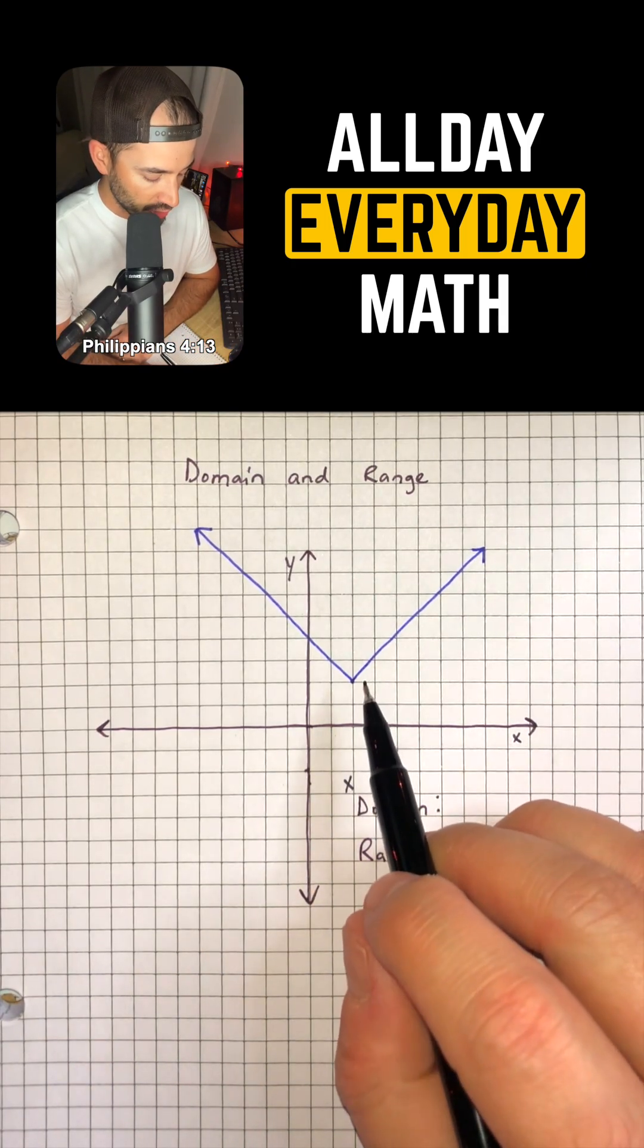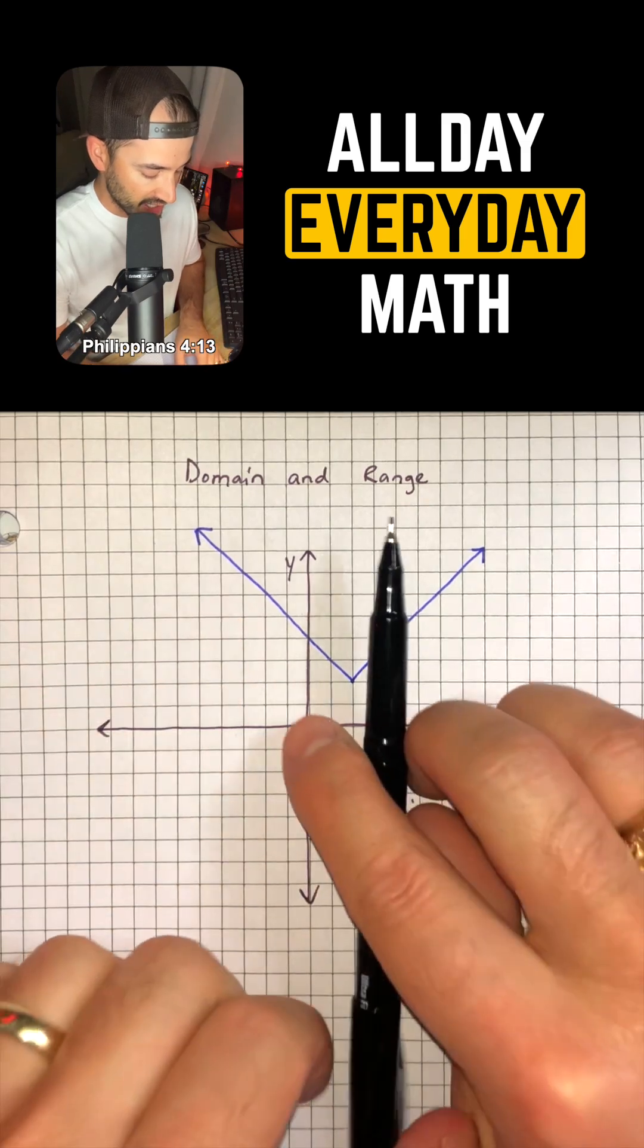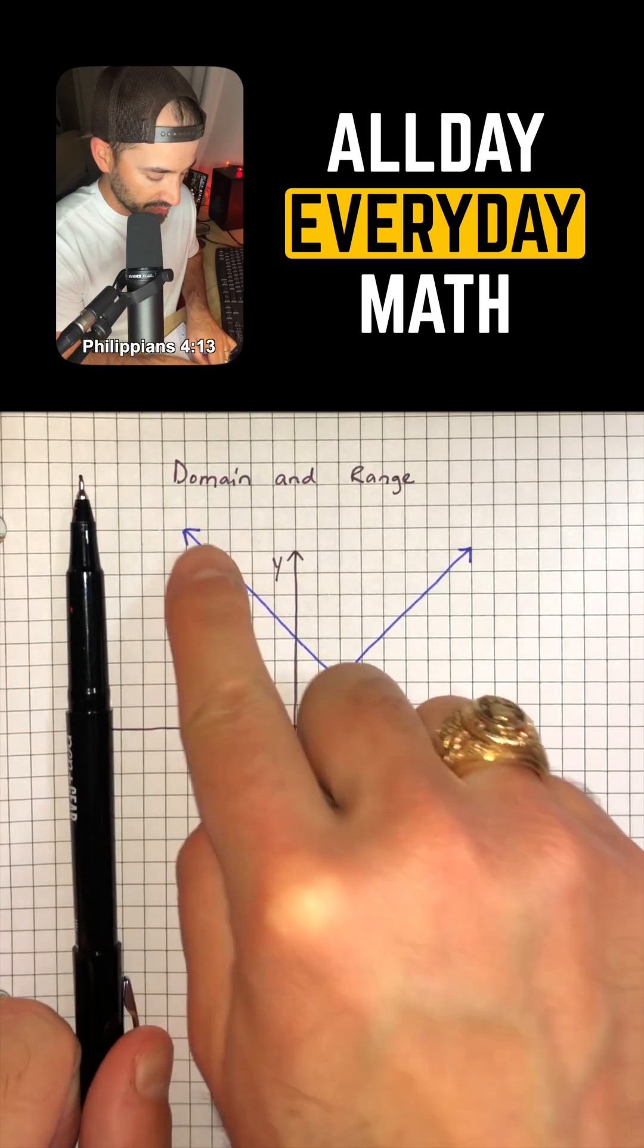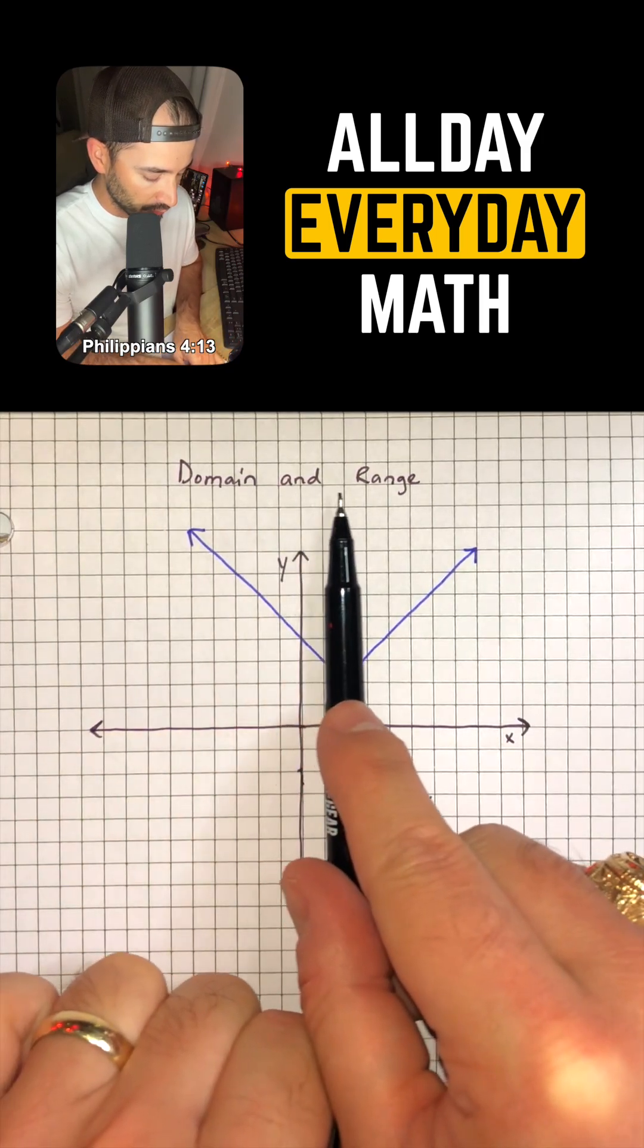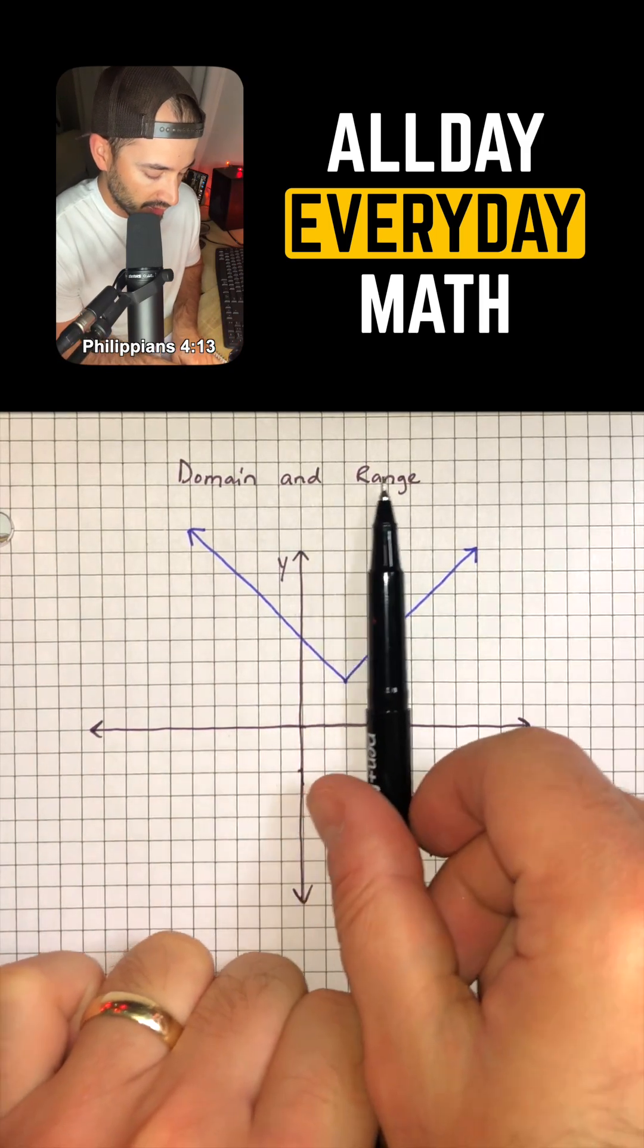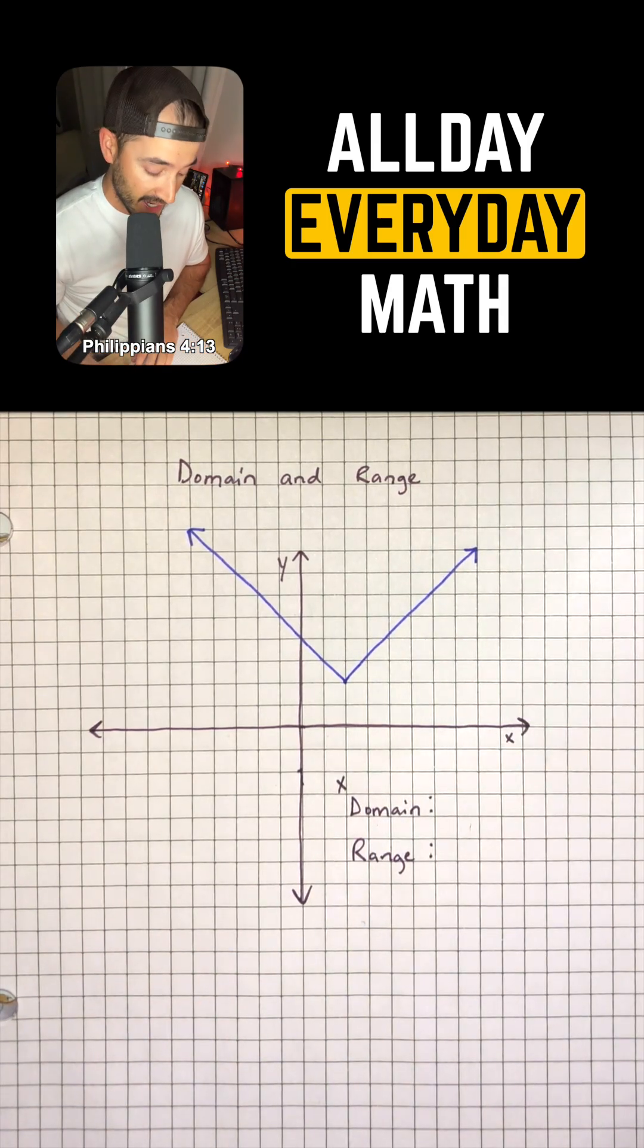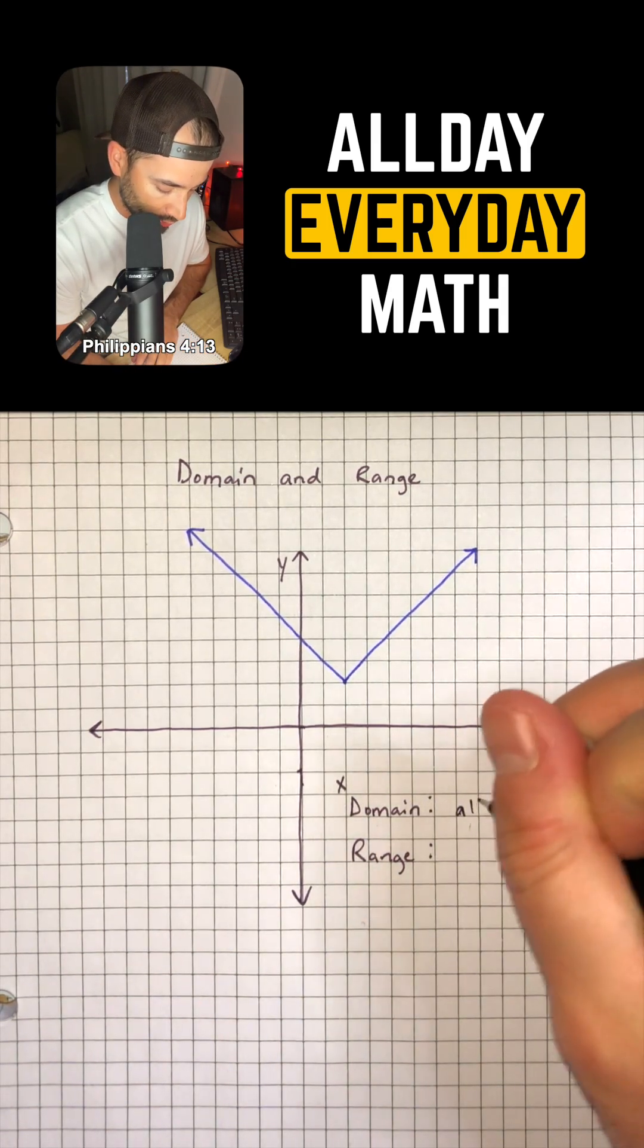So if we look at our graph, it appears that as we continue to the left, it's going to just keep on going because we have that arrow. And if we go to the right, it's going to keep on going this way as well. So our domain is actually going to be all real numbers.